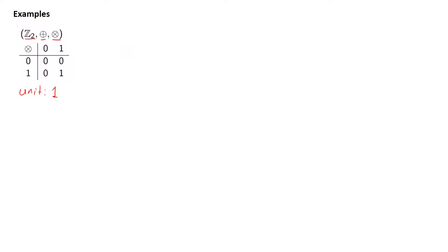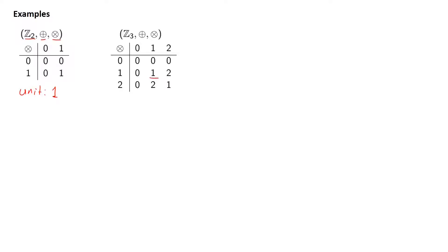Here is another ring where we have the elements 0, 1, and 2, with addition modulo 3 and multiplication modulo 3. The units are the elements 1 and 2, because both have multiplicative inverses. The inverse of 1 is 1, and the inverse of 2 is 2. So the units here are 1 and 2.